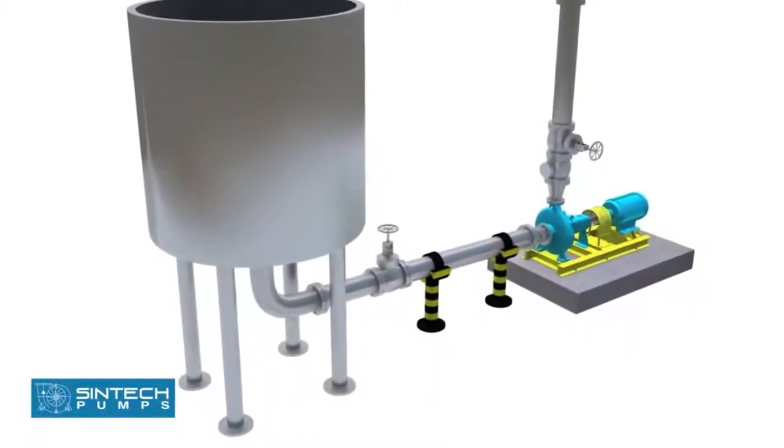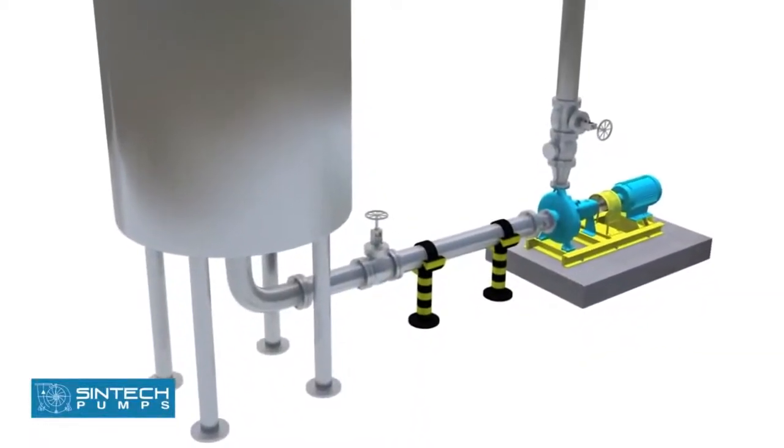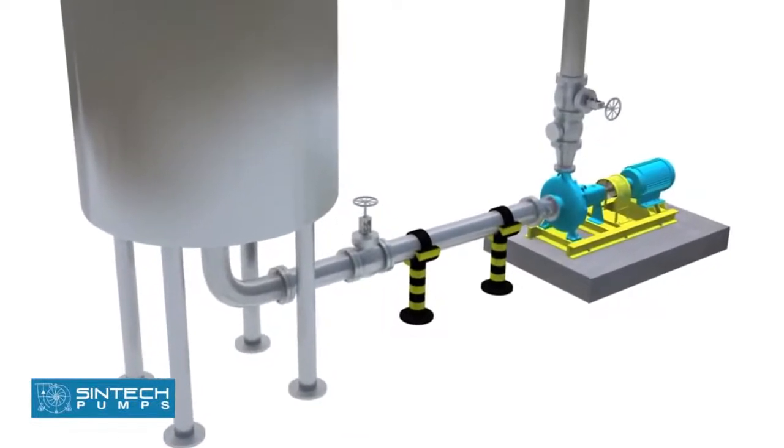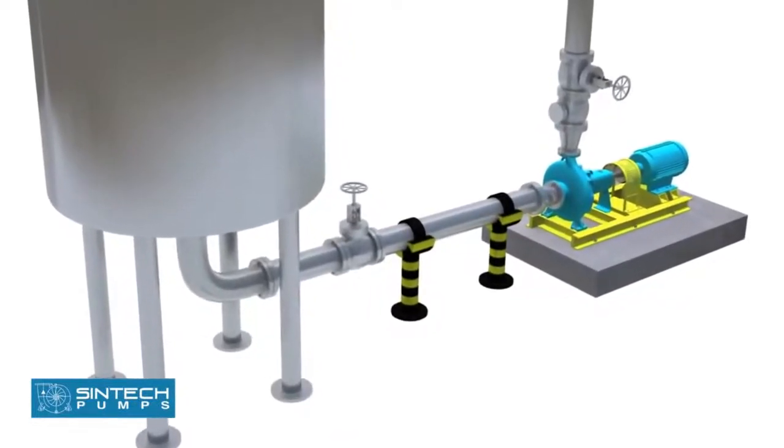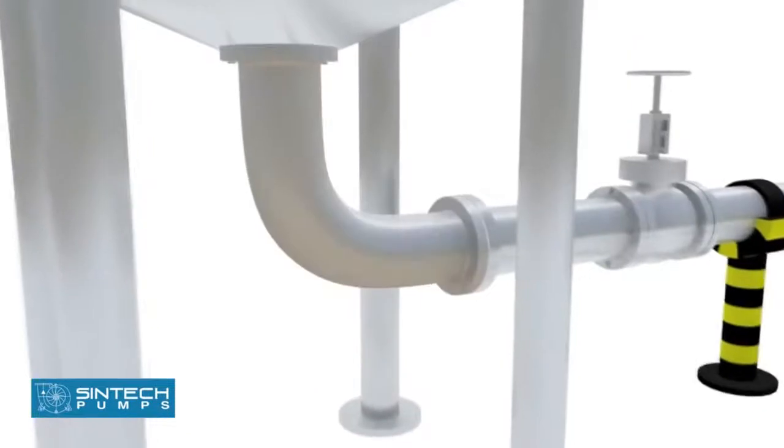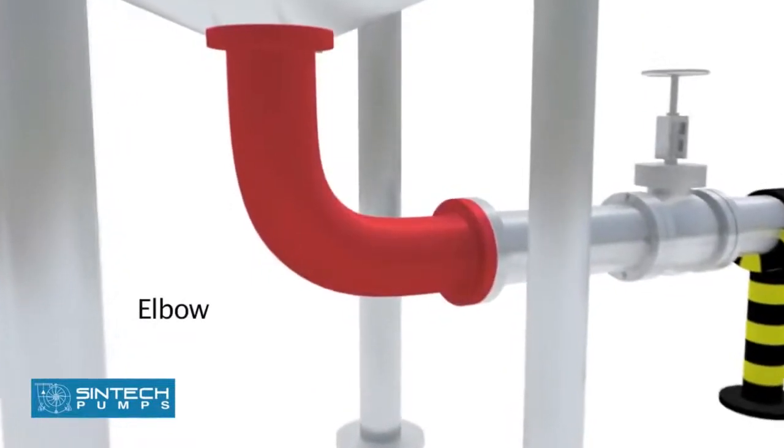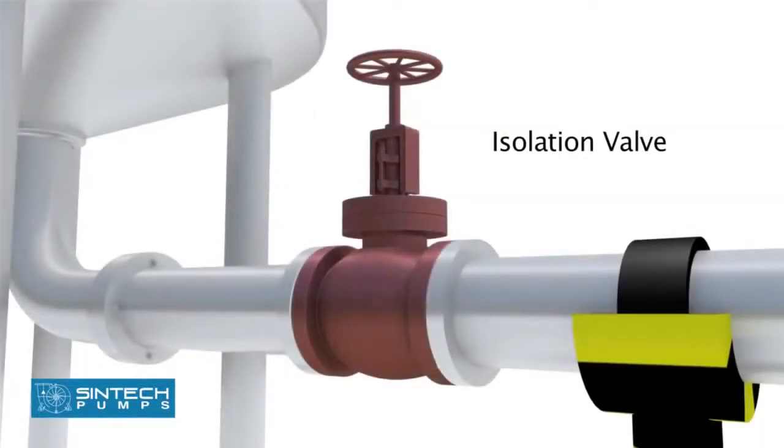In case the water is being supplied to the suction through gravity, for example an overhead tank, a slightly different setup is needed. The elbow should be of standard type or of the long radius type. Isolation valve should be provided in suction line.